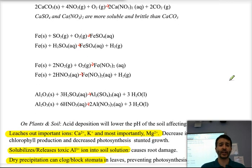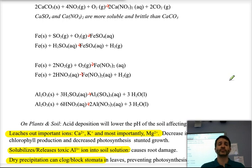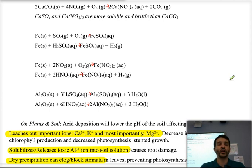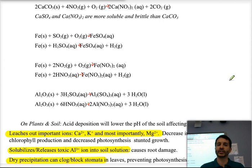On metals, acids react with iron — used extensively in bridge building — to form iron nitrate or iron sulfate, typically iron(II). This reaction is significant enough to erode the metal, causing it to rust and dissolve. This is one of the reasons why many bridges in the country are in such poor shape.